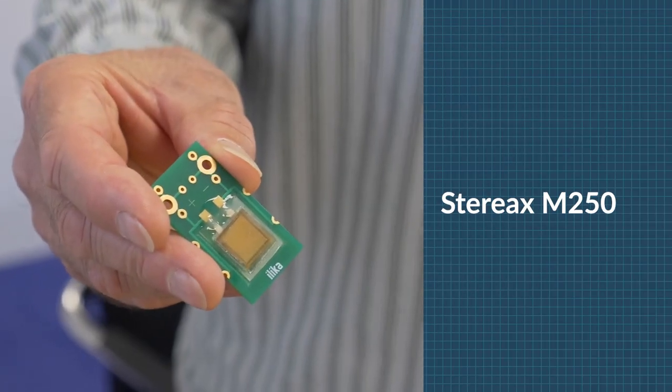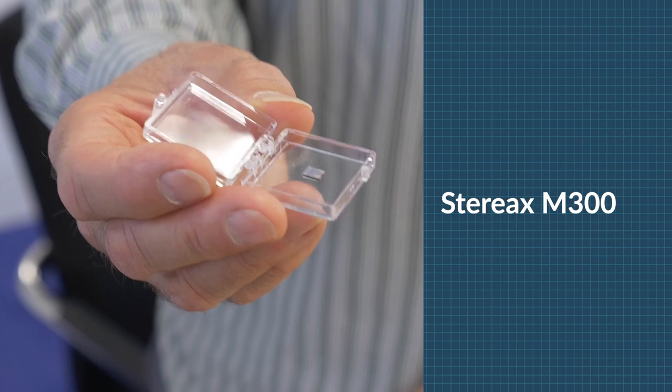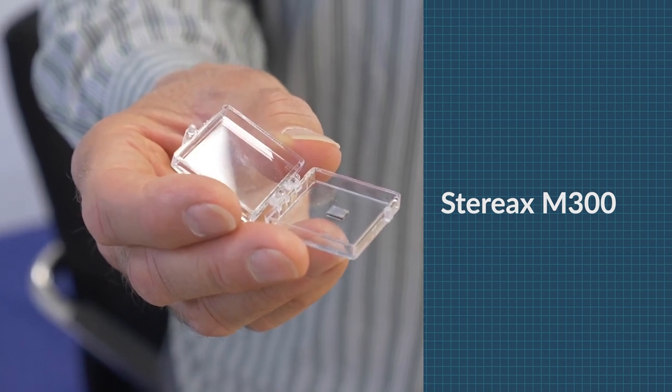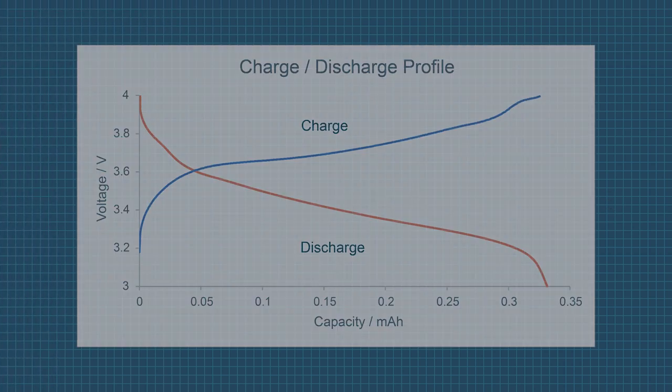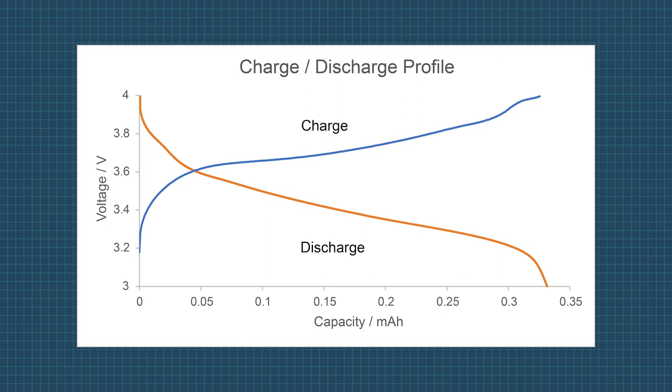So how do you get the best performance of a Stereax battery in terms of its voltage window? So for Iliqus Stereax batteries, the voltage window is between 3 volts and 4 volts. So when the battery is being charged, we need to make sure it doesn't go above 4 volts. When it's being discharged, we need to make sure it doesn't go below 3 volts.